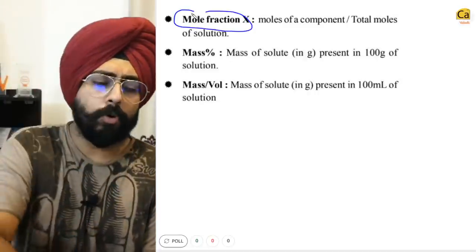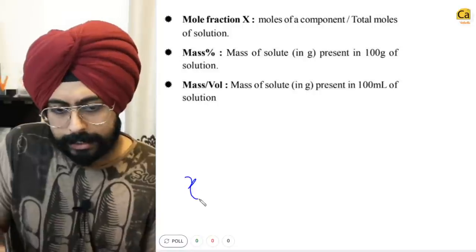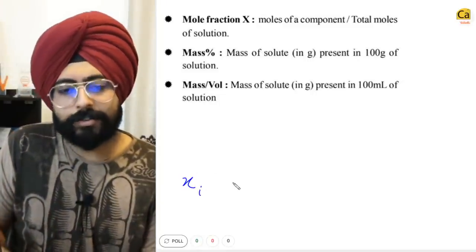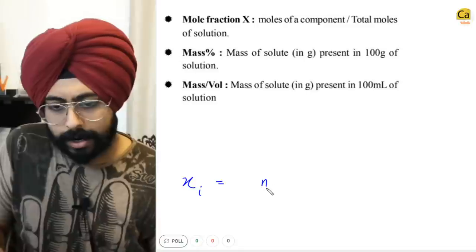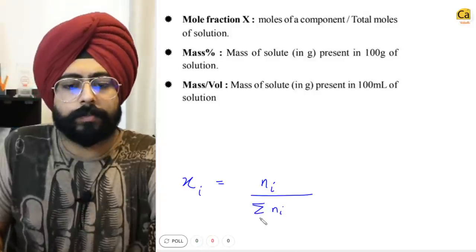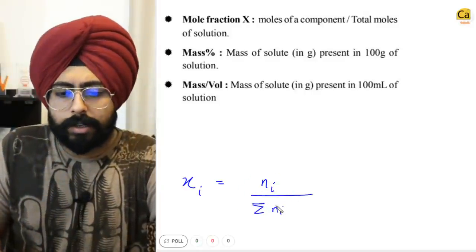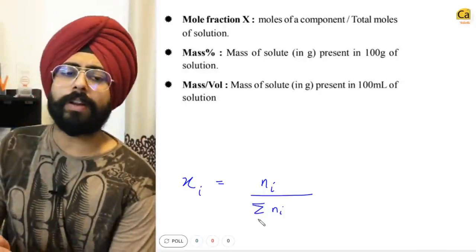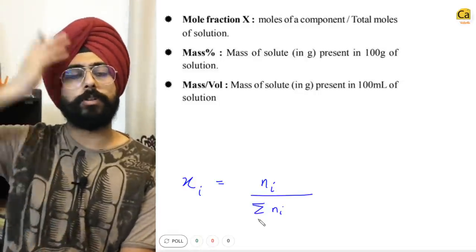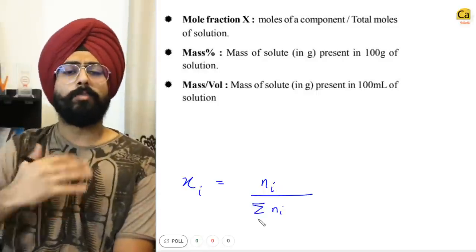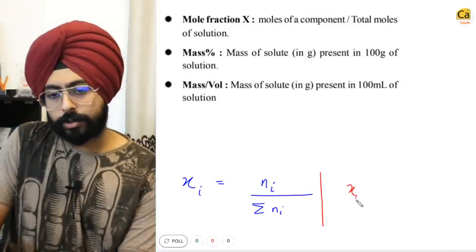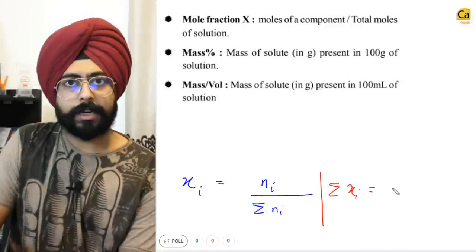There are multiple ways to express solution composition. First is mole fraction, the simplest. Mole fraction is represented as chi (χ). The chi of any component equals the number of moles of that component divided by the sum of total moles in the mixture. Mole fraction is versatile — you can use it for solutions with any number of components: solid, liquid, gas, or mixed. The sum of all mole fractions in a solution equals 1.